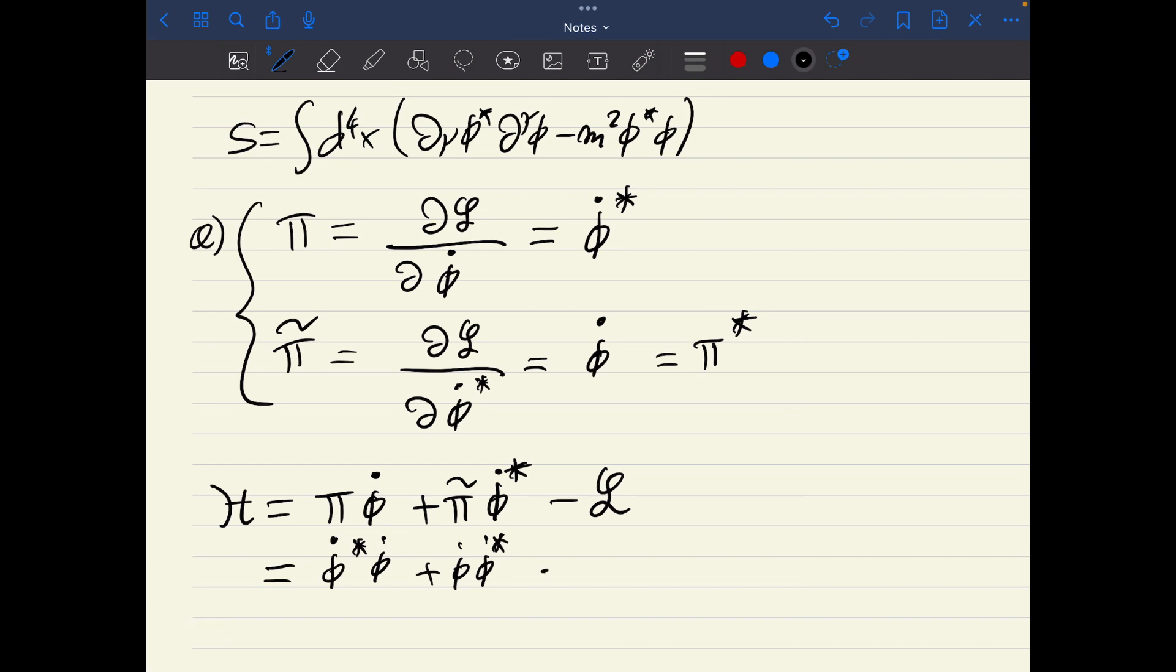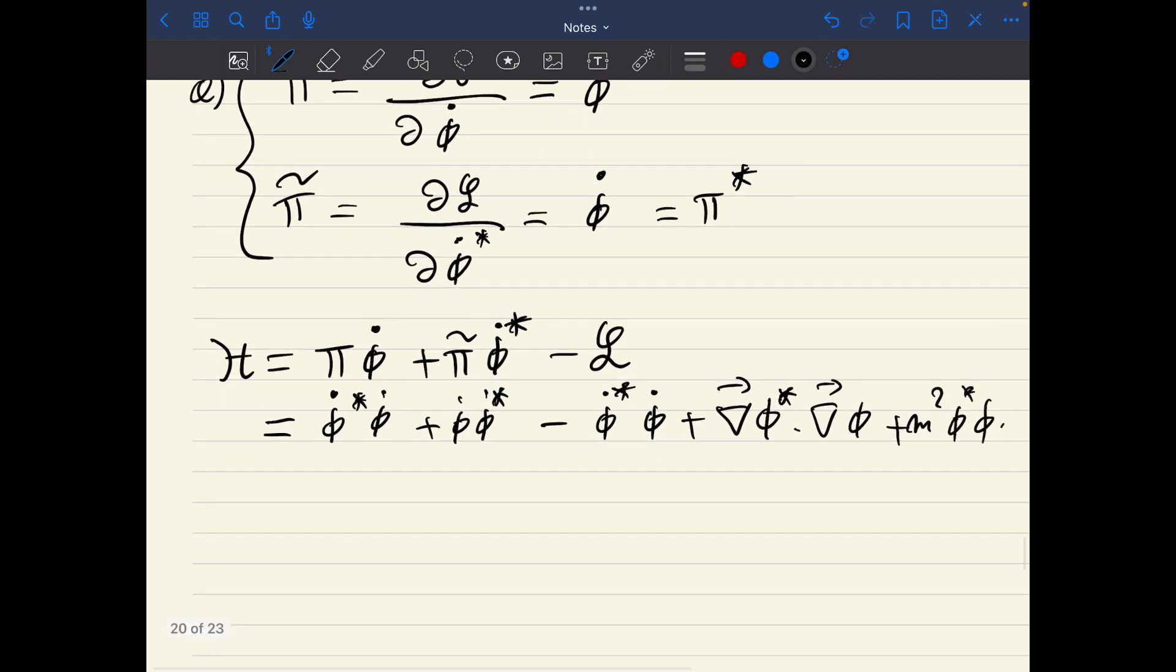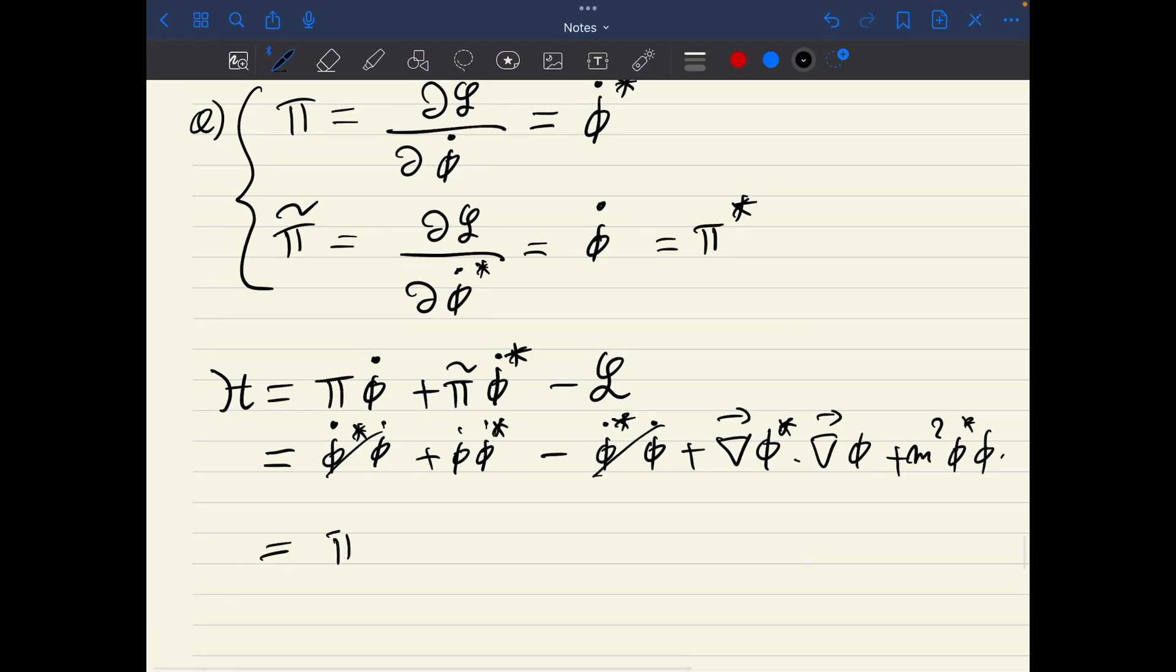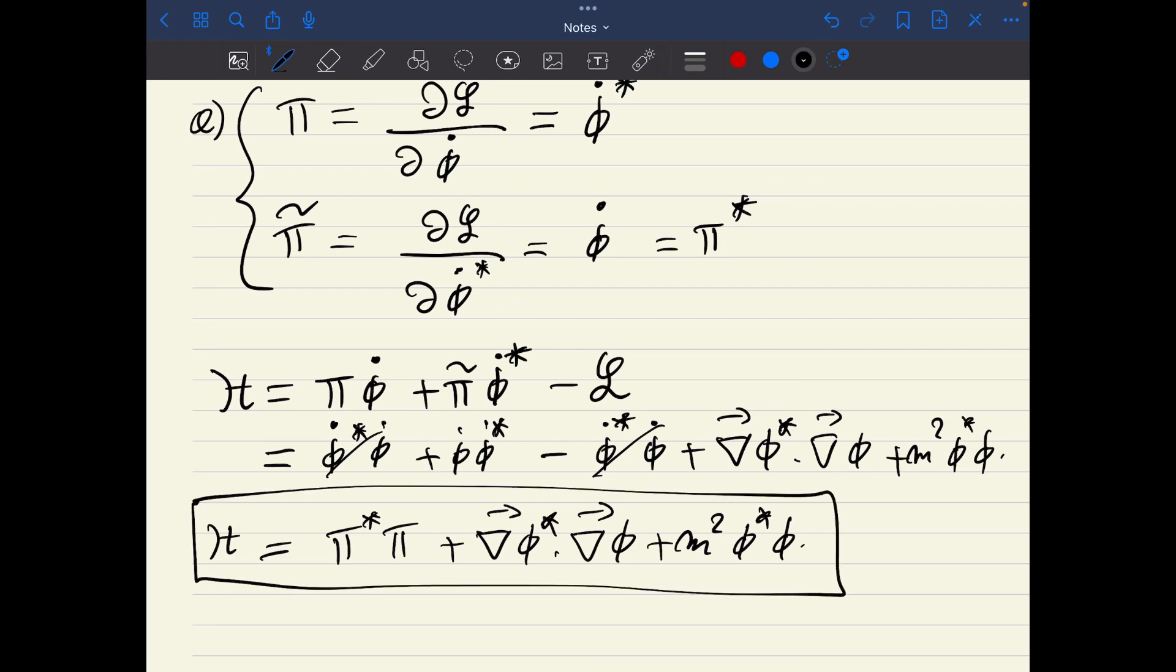The Lagrangian density is written here. I will decompose the first term into a sum of temporal derivative and spatial derivative. So the first term is phi dot star phi dot, and then we have the spatial derivative and the mass term. We see that these two terms cancel, and we have in the end, if I write everything in terms of pi for the first term, phi dot is simply pi star times pi. This is the Hamiltonian density for the complex scalar field theory.